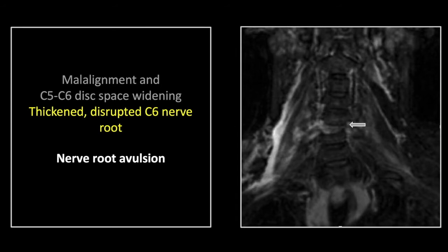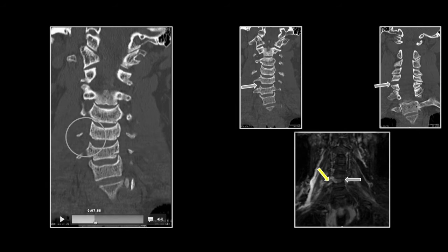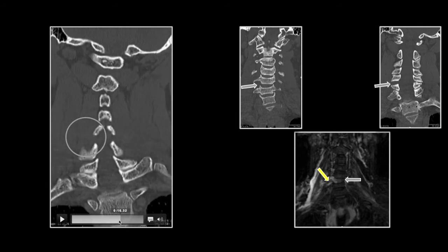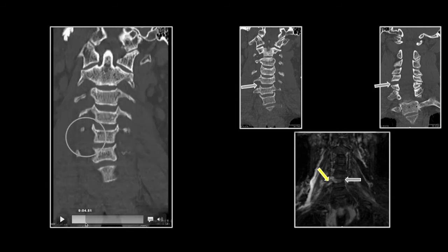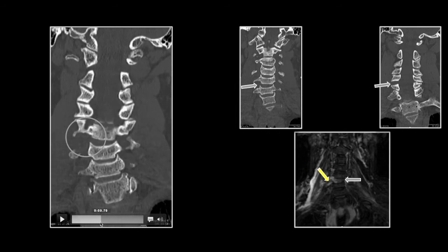We are fortunate enough here, even with the relatively low resolution, to see the thickened and disrupted C6 nerve root, which is the dread complication of this particular injury. This type of injury usually results in a fairly long-term brachial plexus palsy. There is the widening of the intervertebral disc space, as well as the facets and lamina on that side.